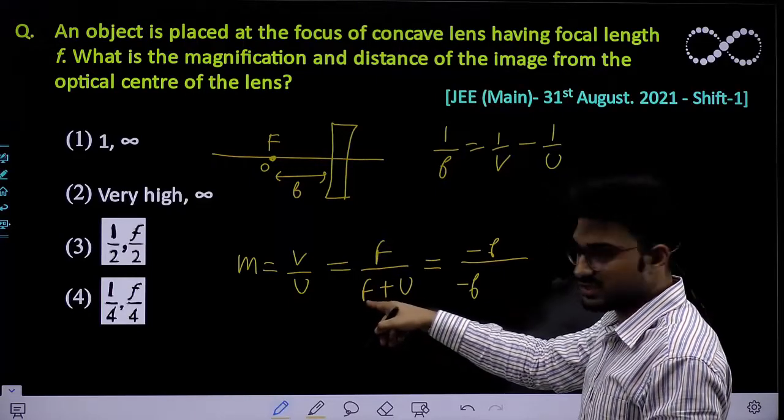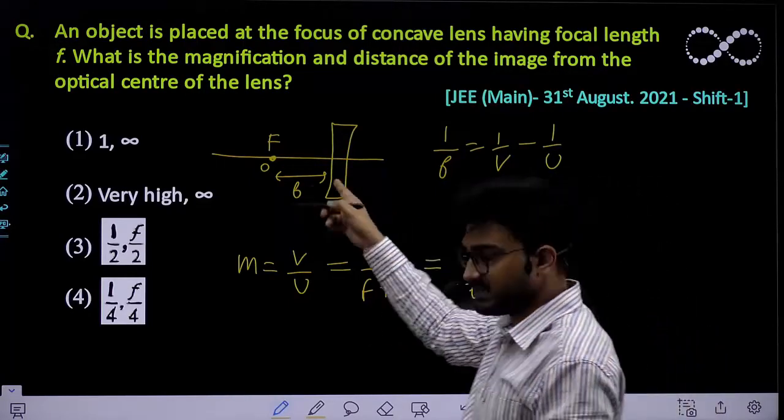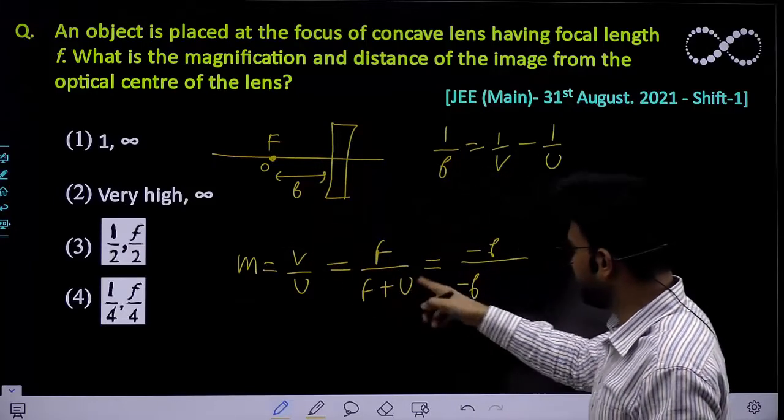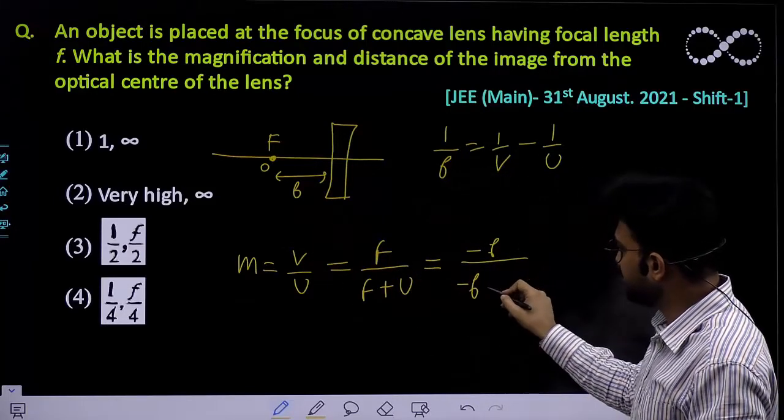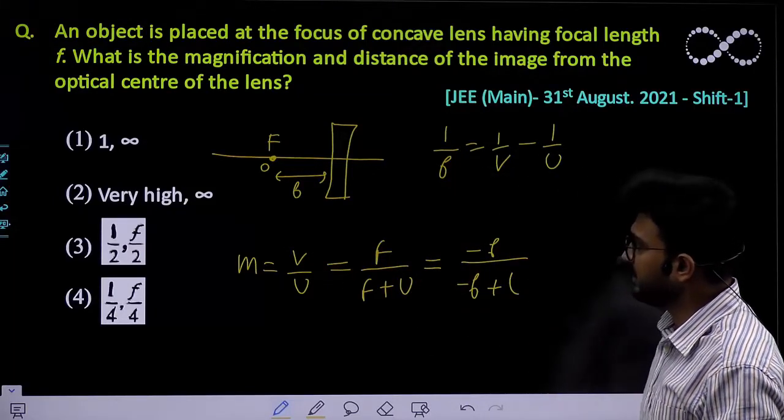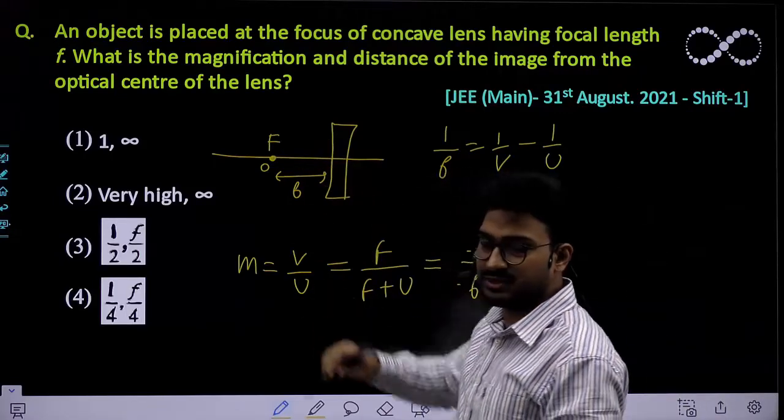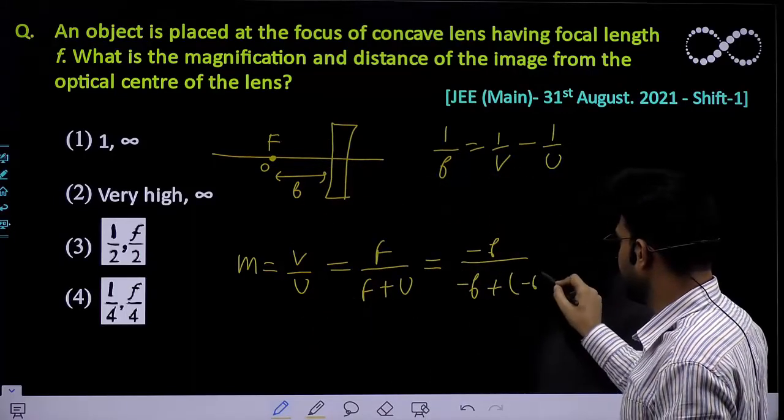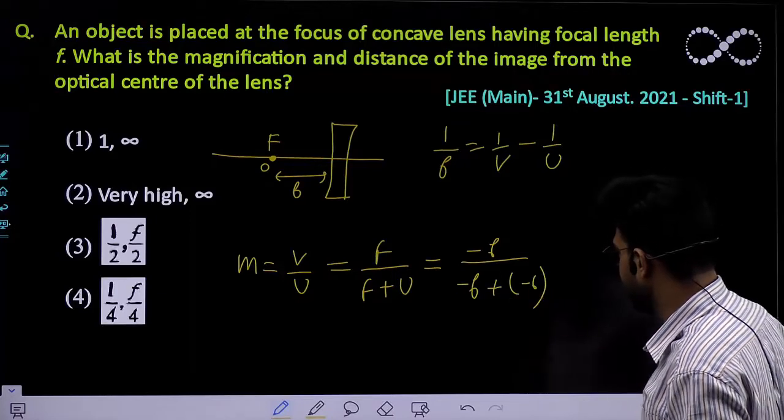The focal length of a concave lens is negative, so it's -f. Since the object is at the focus, u = -f. Therefore, m = -f/(-f + (-f)) = -f/(-2f).